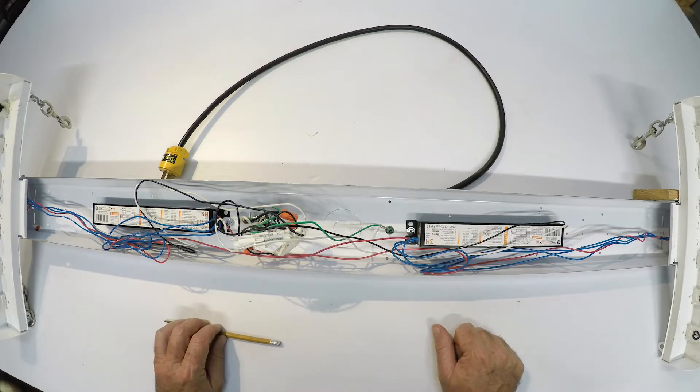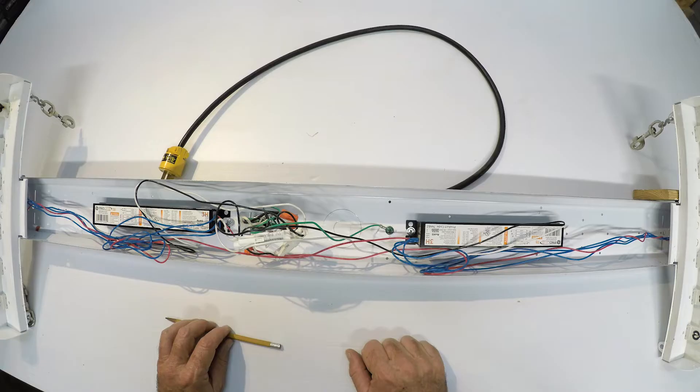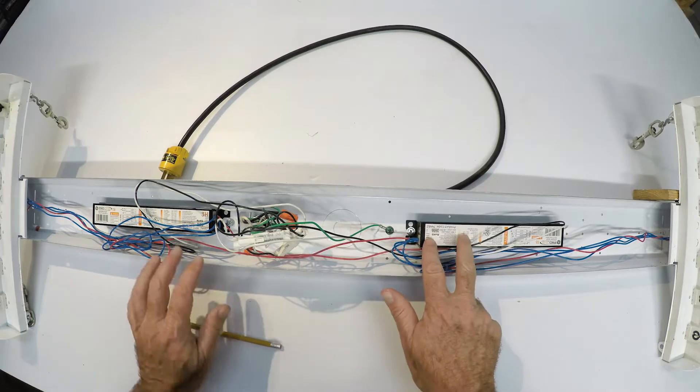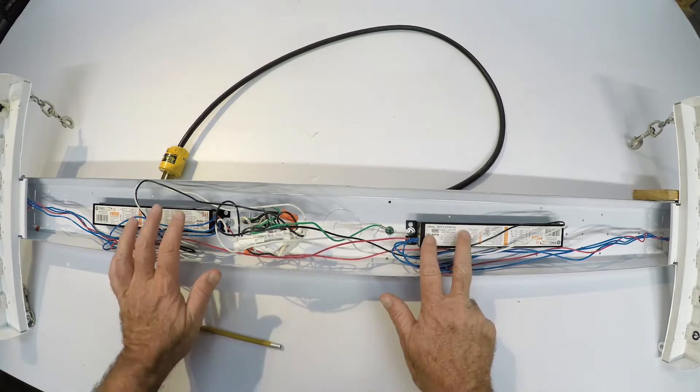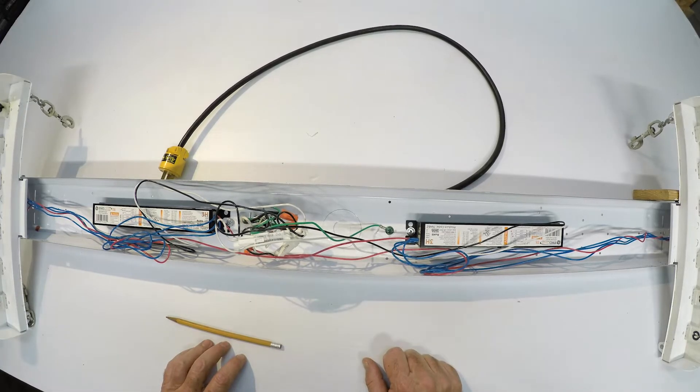There's a lot of places where you have two ballasts in a four lamp fixture where they may have put it two and two or they may have put it one and three, and this allows for two levels of lighting in the space and it's common.